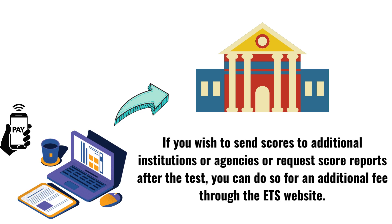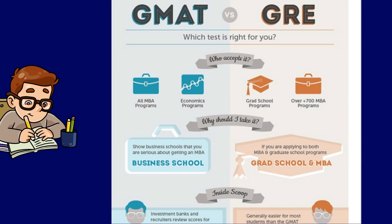What is the difference between the GRE and GMAT? The GRE and GMAT are both standardized tests used for graduate school admissions, but they differ in their focus and target audience. The GRE is more widely accepted and used for a broader range of graduate programs, while the GMAT is specifically designed for business school admissions.